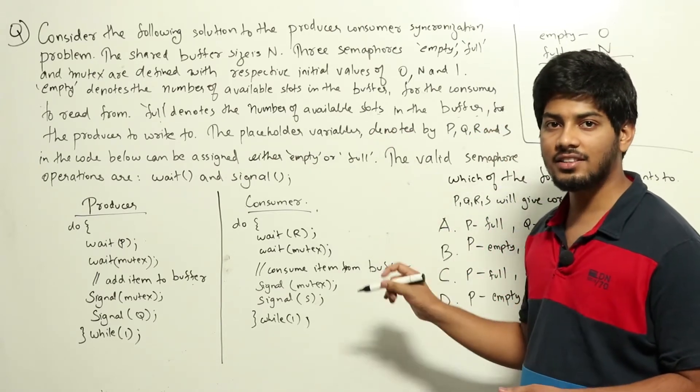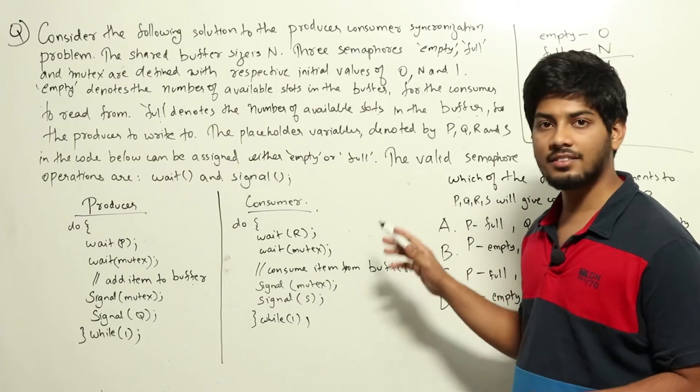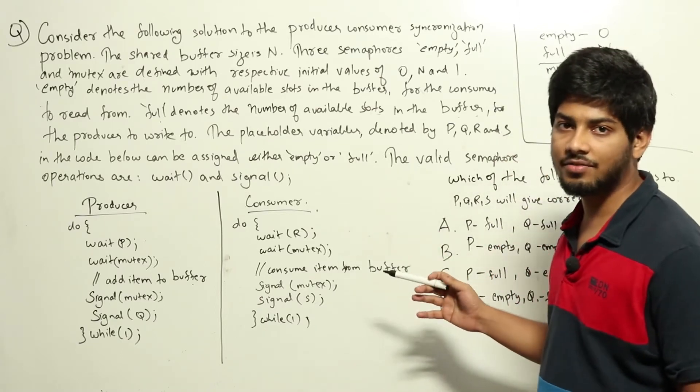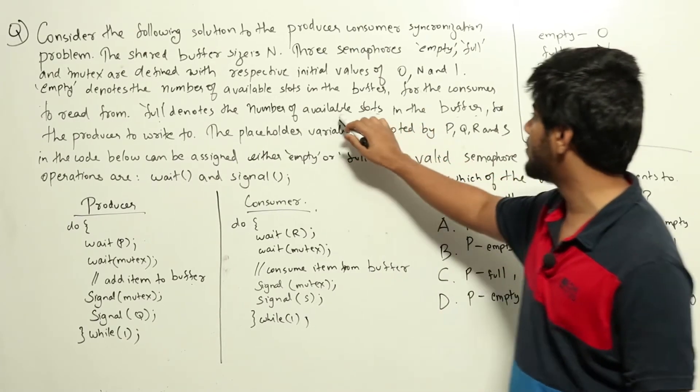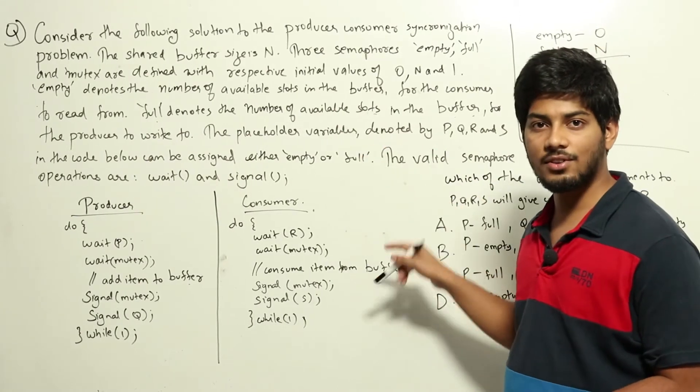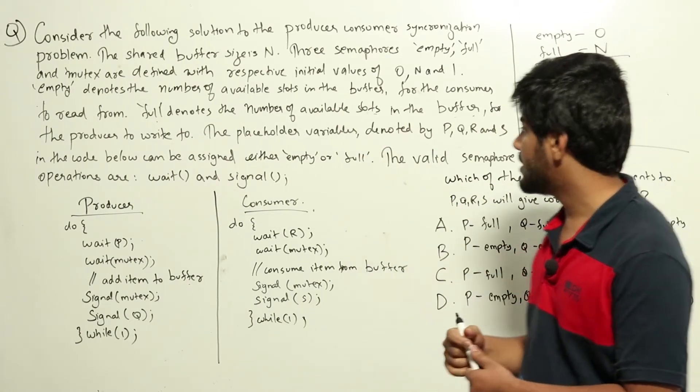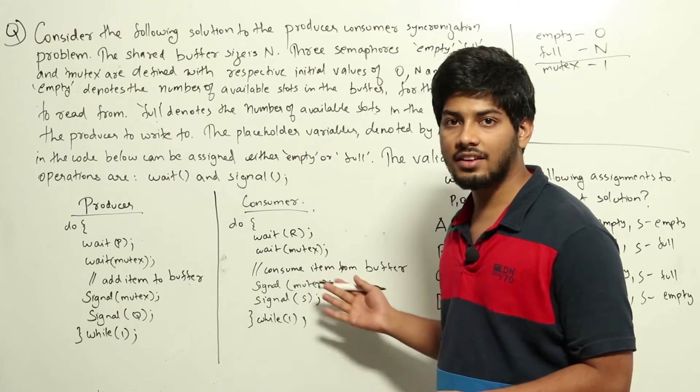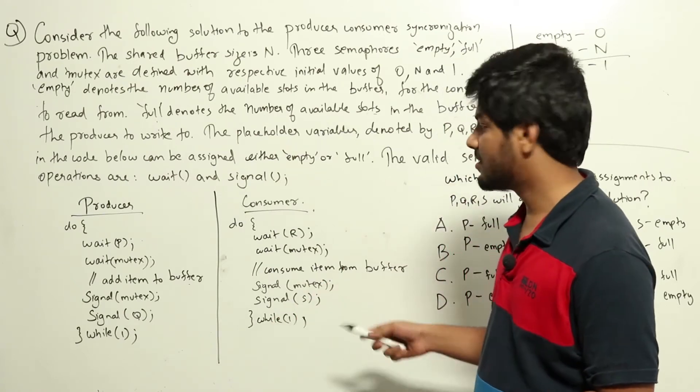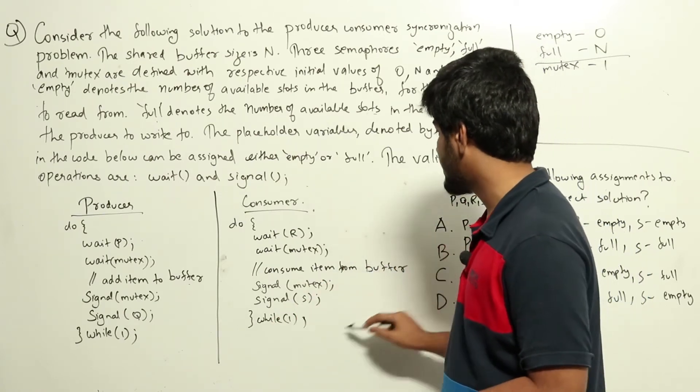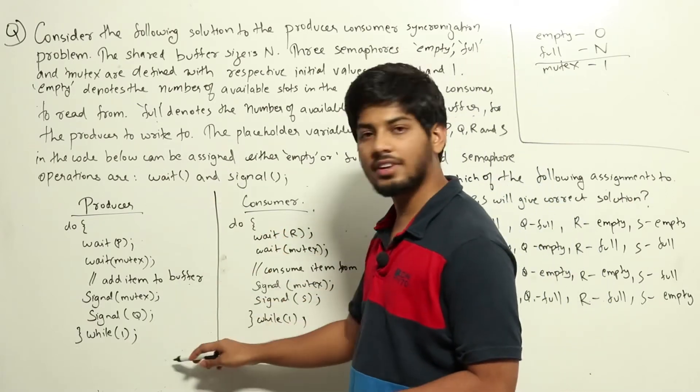You should note that initially there are n slots available in the buffer. It's not that n slots are completely filled up. If n slots are available in the buffer and total number of slots are n, which means there is nothing in the buffer currently. N slots are available, so there is nothing for consumer to consume from. And producer can write.